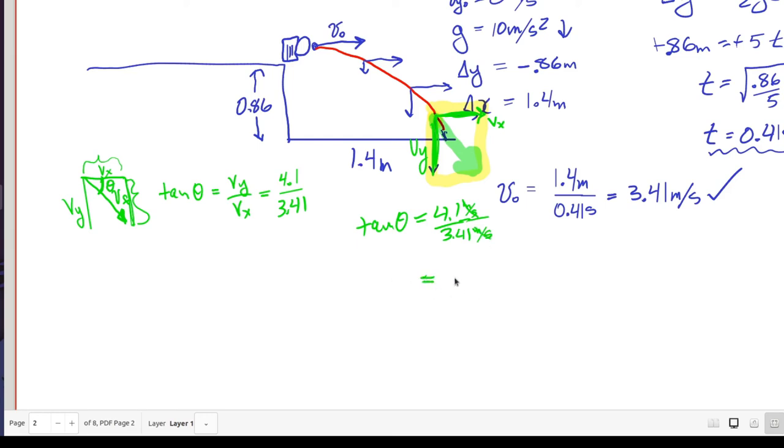That ratio is about 1.2. So tan theta is 1.2. How do I undo a tangent to get rid of this? I use the inverse operation on both sides of the equation.